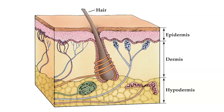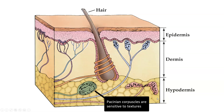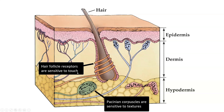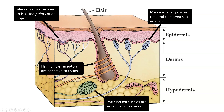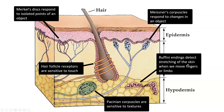Each of these cell types is responsible for a different thing. Pacinian corpuscles are sensitive to different textures, like running your hand along sandpaper. Hair follicle receptors are sensitive to touch — the hair follicle is attached to an axon that senses its movements and converts those mechanical movements into an electrical signal sent up to the brain. Merkel's discs respond to isolated points of an object — whether it's round or flat, sharp or smooth. Meissner's corpuscles respond to changes in an object, like if it flutters or vibrates. Ruffini endings detect stretching of the skin — when we move our fingers or limbs, our skin literally shifts and stretches, and Ruffini endings pick up on that and send signals to the brain.